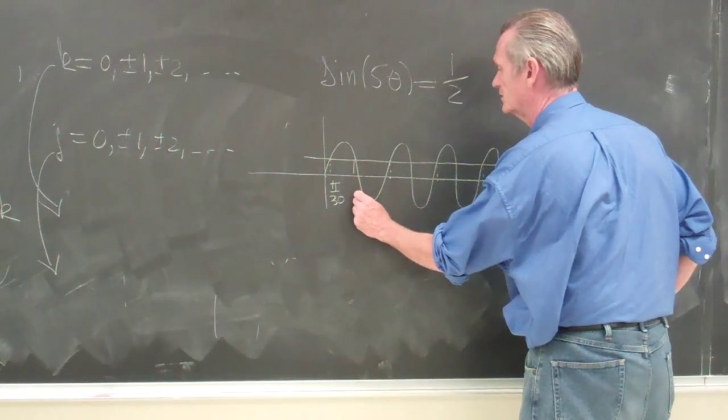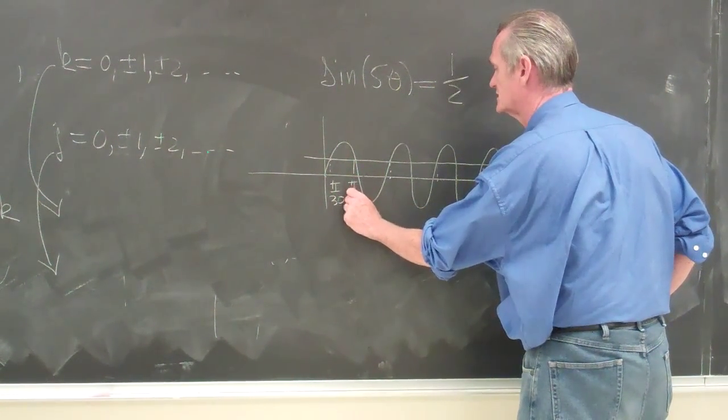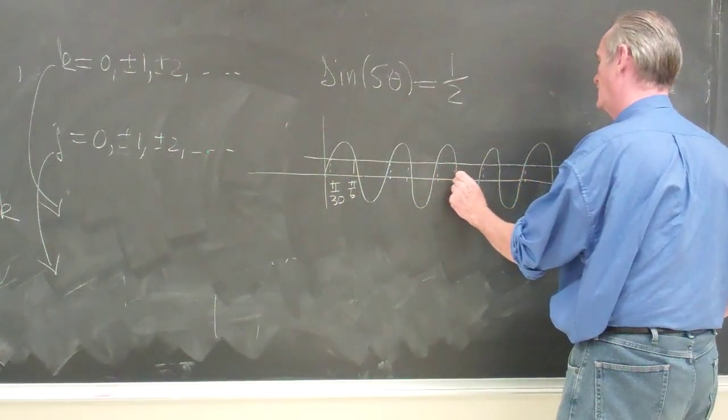And this point here is going to be my pi over 6, and then these are the points that are offset over there.